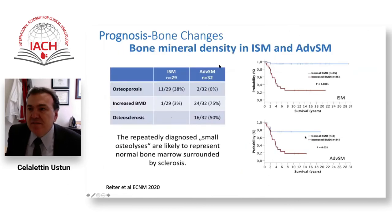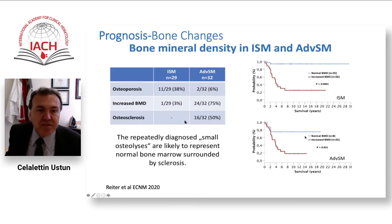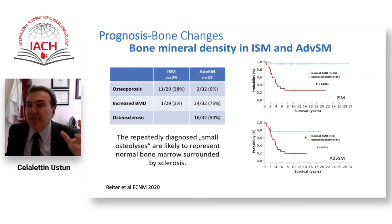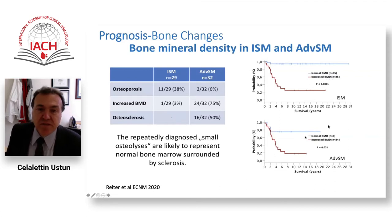Regarding bone marrow density: alkaline phosphatase is increased in many patients. In indolent forms, osteoporosis is most common. Osteosclerosis is mostly seen in advanced groups with increased bone density. Large lytic and sclerotic lesions are more common in advanced forms. Importantly, increased bone marrow density decreases survival even in both advanced and indolent SM patients.